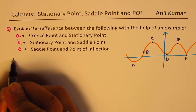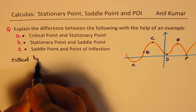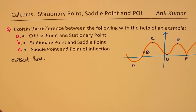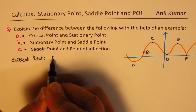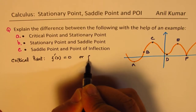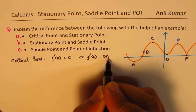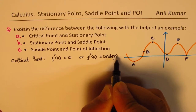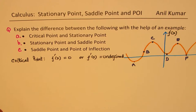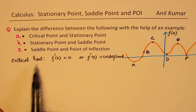Now let's begin with the critical point. When I say critical point, I mean that the derivative is either equal to zero or the derivative is undefined, for any function f of x. That's what we mean when we write critical point.